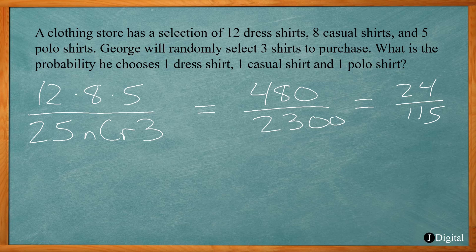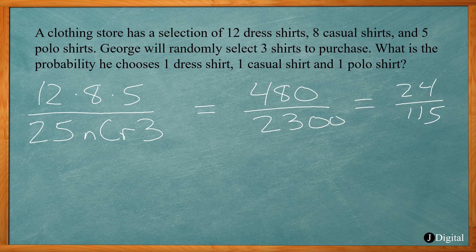Simplifying 480/2300 gives 24 over 115 — the probability that he randomly picks one dress shirt, one casual shirt, and one polo shirt. The key is breaking these problems into their parts. None of the concepts are unfamiliar — the Fundamental Counting Principle and combinations have appeared on previous tests — but here they're combined into one problem. You may need to combine more than one topic, and that's what makes these ACT probability problems challenging.